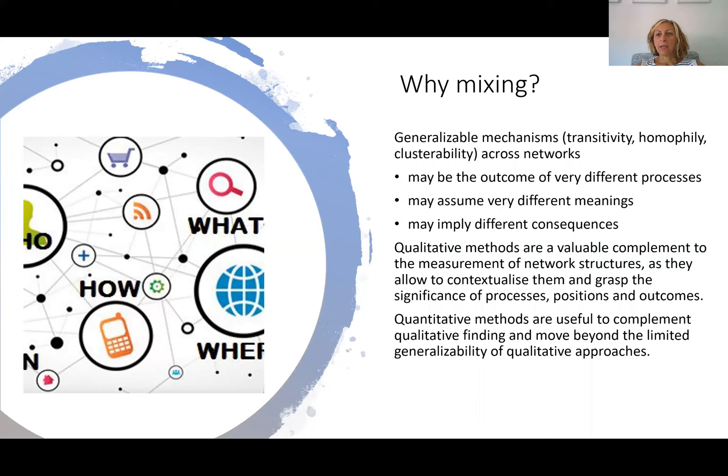But why do we want to mix methods in social network analysis? The mechanisms we identify across networks — for example, transitivity or clusterability — might be the outcome of very different processes, might assume very different meanings, and might imply very different consequences. When we apply qualitative methods, we can complement the measurements of network structures and contextualize the structures, grasping the significance of the processes, positions, and outcomes for the people embedded in the network.